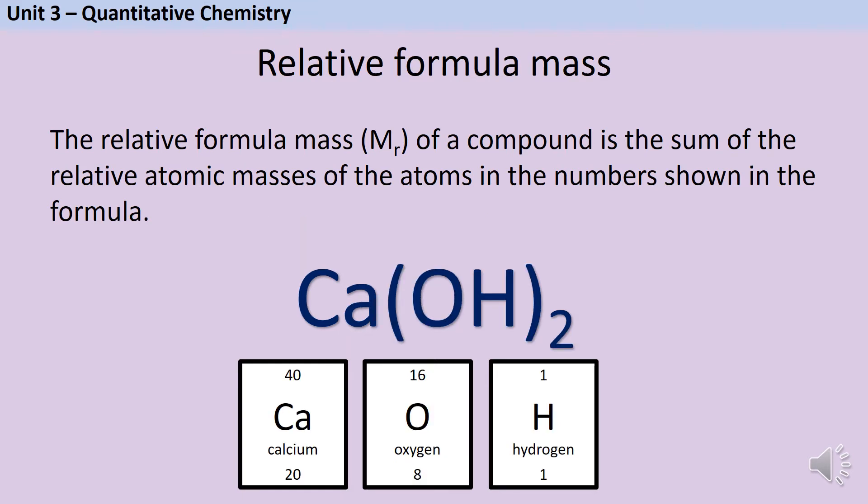Some simple formulae involve brackets and it's important you take these into account. So when working out the relative formula mass of calcium hydroxide, Ca(OH)2, I have to include one calcium atom with a mass of 40 but two oxygen atoms with a mass of 16 and two hydrogen atoms with a mass of one, giving me a relative formula mass of 74.